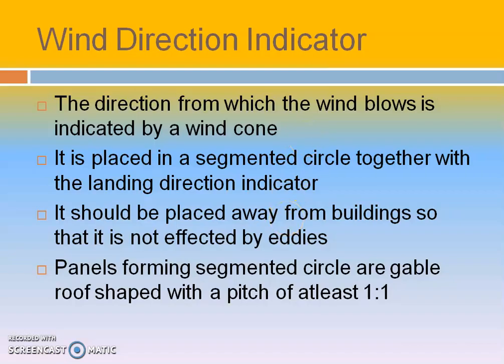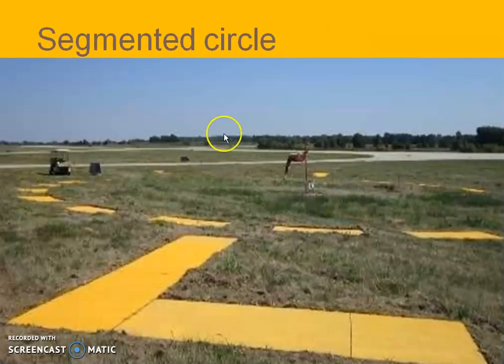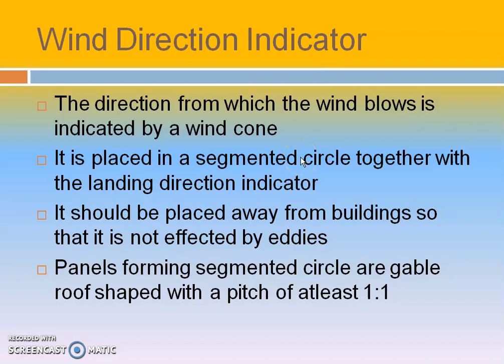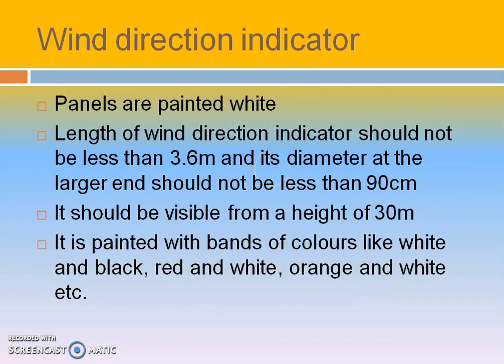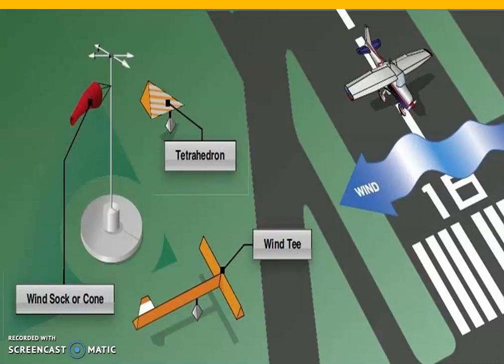The direction from which the wind blows is indicated by means of a wind cone, placed inside the segmented circle. It should be free from obstructions from buildings, and eddies should not be present. The panels are painted white. The wind direction indicator length should not be less than 3.6 meters and diameter should not be less than 90 centimeters. It should be visible at a height of 30 centimeters. In different bands, the indicator can be painted either white and black, red and white, or orange and white. These are the wind direction indicators — a T-shaped, tetrahedron-shaped form and a cone are provided.